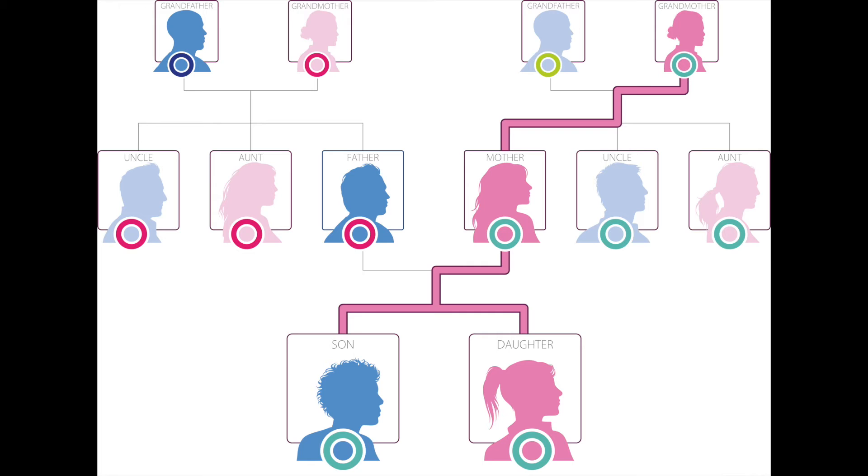Mitochondrial DNA is only passed down by women, but it can be received by both men and women. It is also inherited as a block, and this block of DNA contains many markers which can be used to trace your ancient female ancestry.